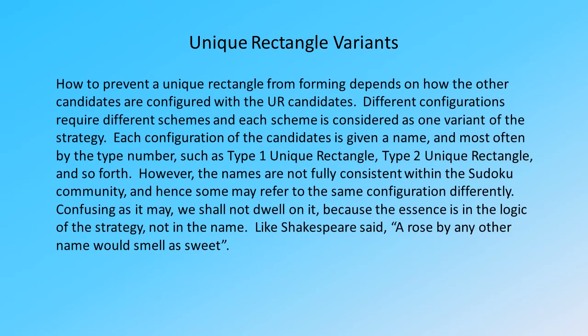How to prevent a unique rectangle from forming depends on how the other candidates are configured with the UR candidates. Different configurations require different schemes, and each scheme is considered as one variant of the strategy. Each configuration of the candidates is given a name, most often by the type number, such as type 1 unique rectangle, type 2 unique rectangle, and so forth.